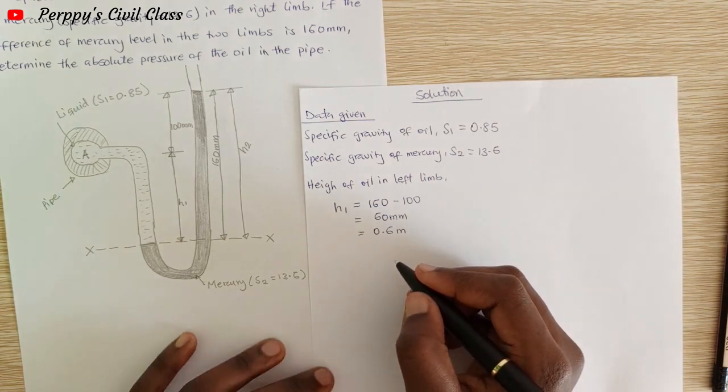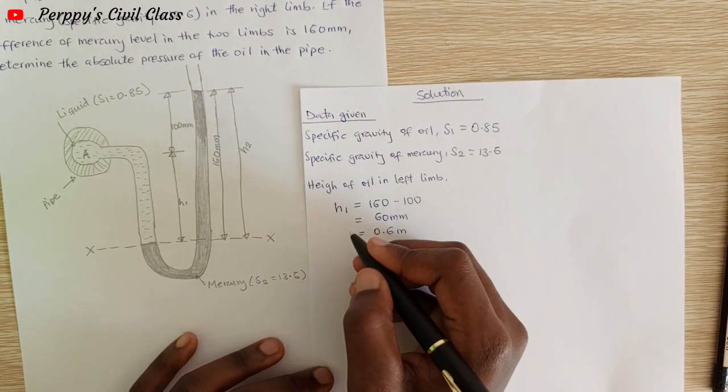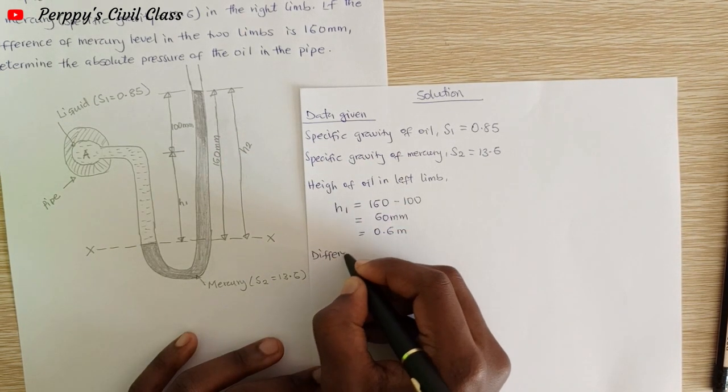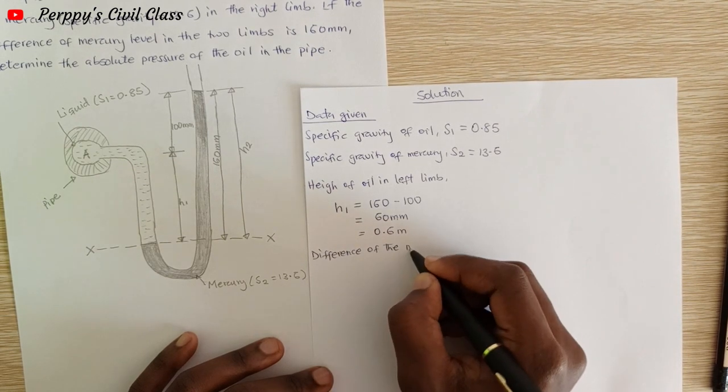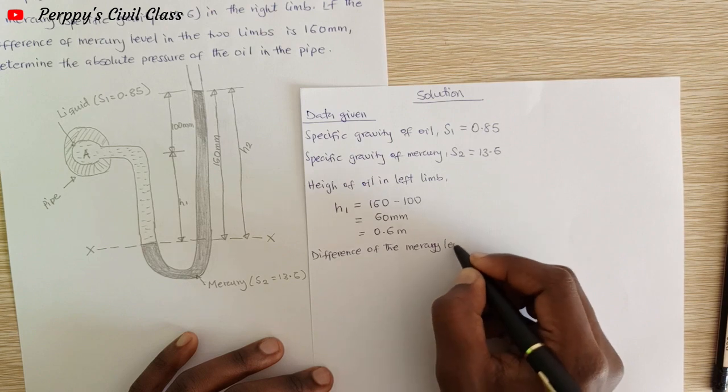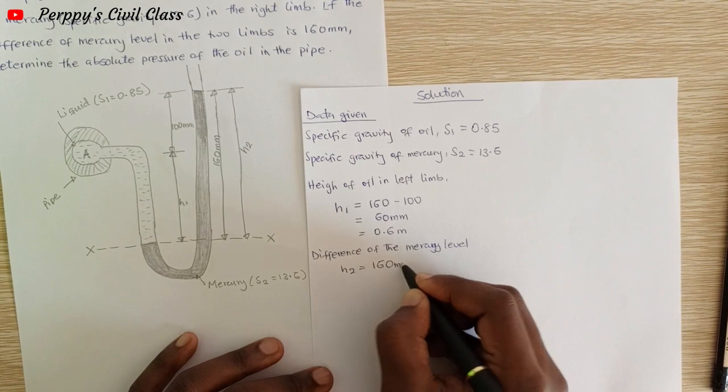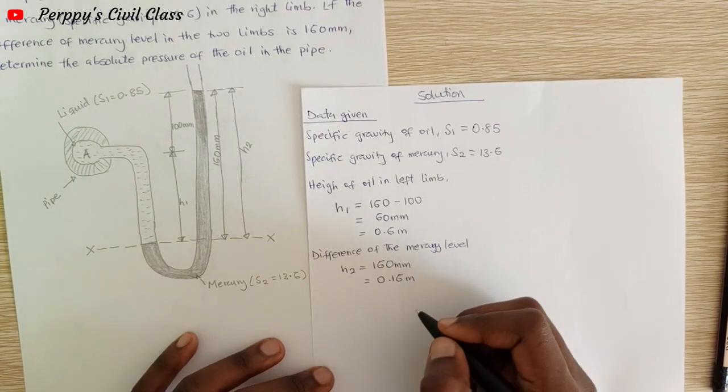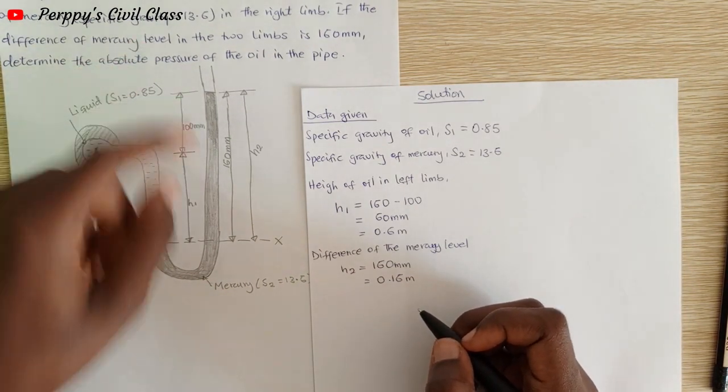The difference of the mercury level, we already have it here as h2, which is 160 mm or 0.16 meters. We are calculating for the absolute pressure of the oil.